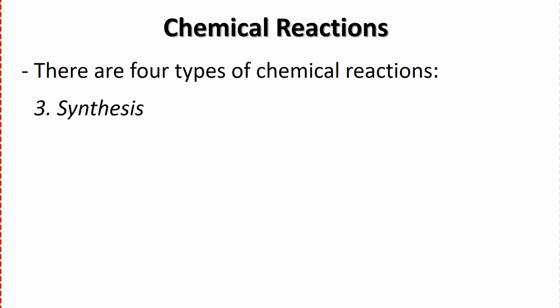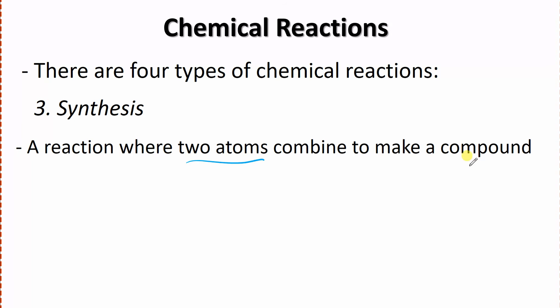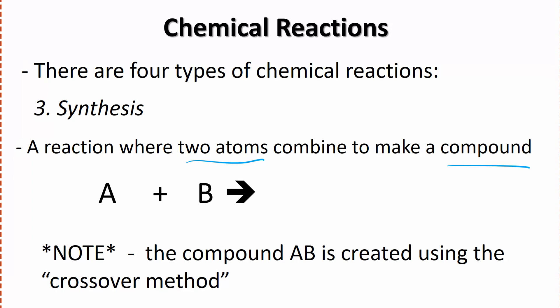Let's take a look at our third type here, which is synthesis. This is essentially the opposite of decomposition. Now we've got two atoms combining to make one compound. This time we have A plus B. Note that AB is created using the crossover method. Technically we would have to think about the crossover method, what our charges were to come up with the correct formula there. Really what we're doing here with this compound is just what we were doing before with our crossover method.